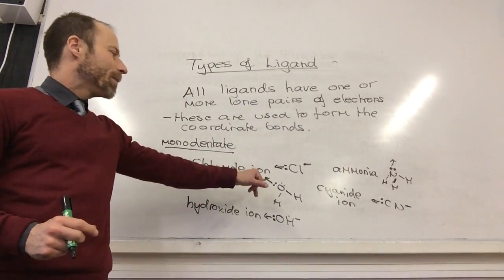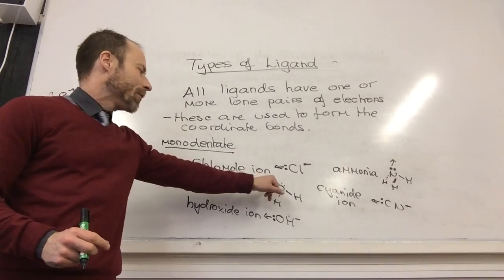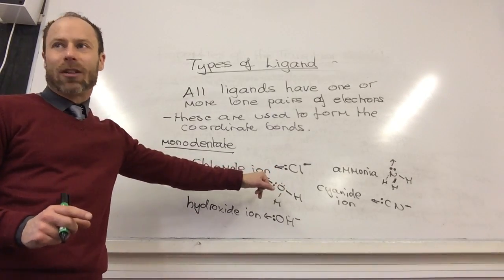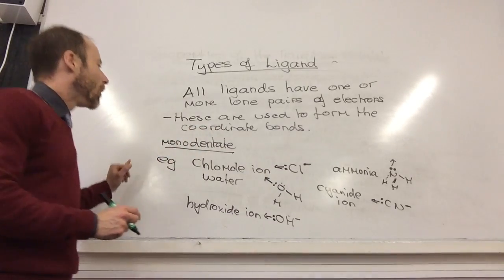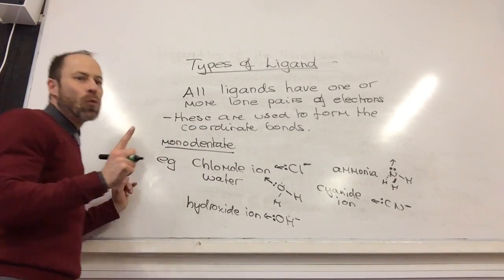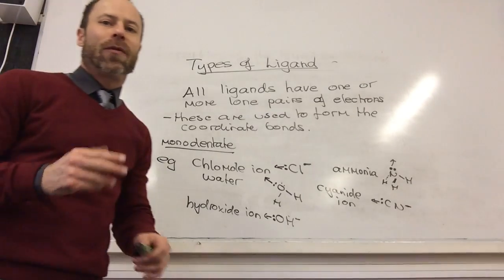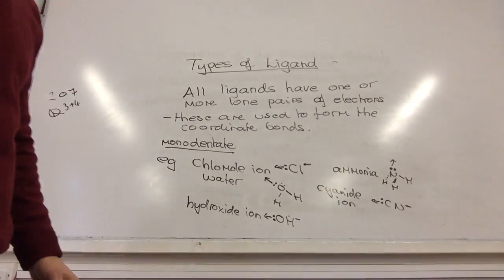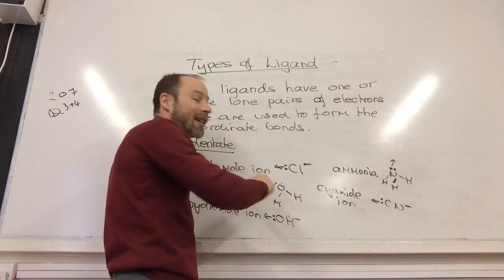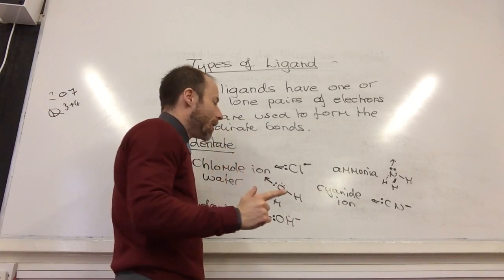So just be clear that even though I can have two lone pairs on one atom, I can only have one coordinate bond per atom. So these are all monodentate ligands, because they all have only one lone pair that they can use to form a coordinate bond with. Water's got two lone pairs but you can only use one to form a bond.